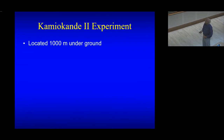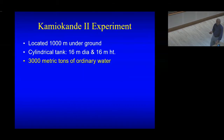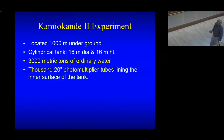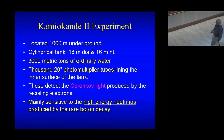This experiment — the Kamiokande II experiment — is located one kilometer underground. It's a cylindrical tank, 16 meters in diameter and 16 meters in height, accommodating 3,000 metric tons of ordinary water. It had 102 8-inch photomultiplier tubes lining the surface to detect Cherenkov light flashes. Like the Davis experiment, this water experiment is mainly sensitive to the high-energy neutrinos produced by boron decay.